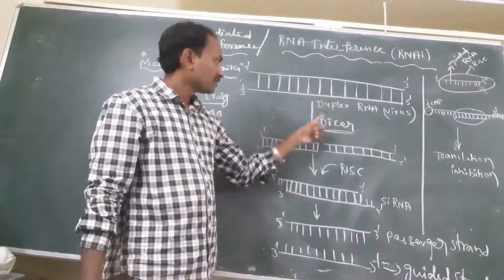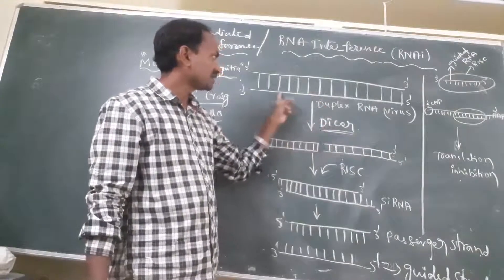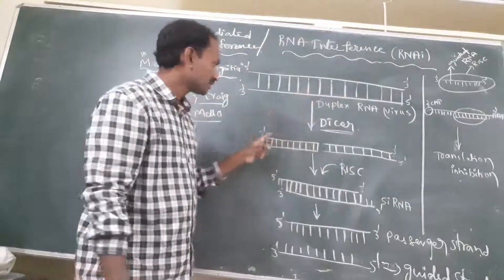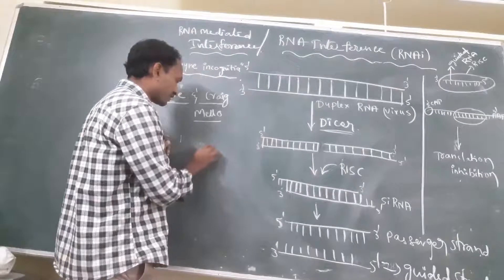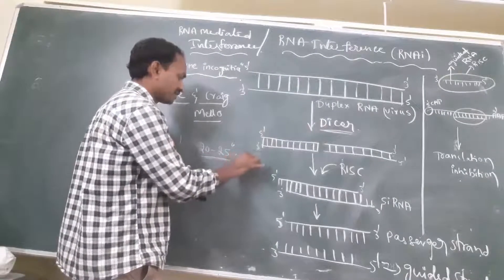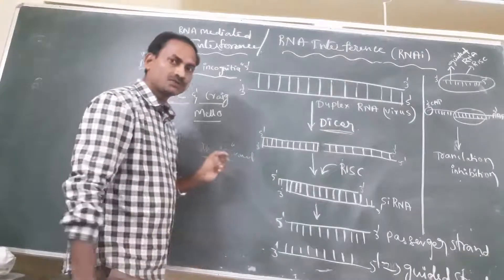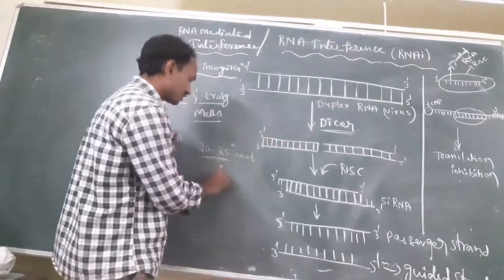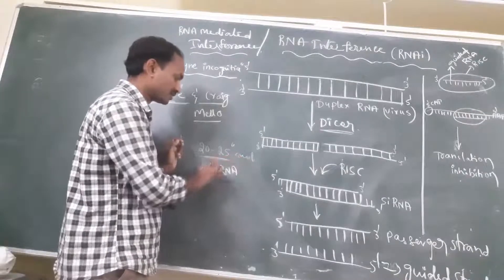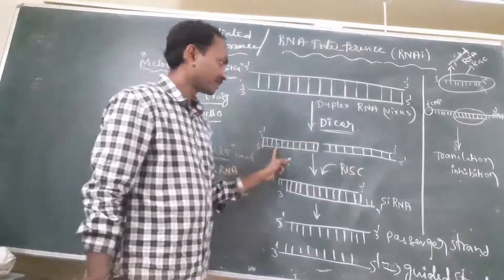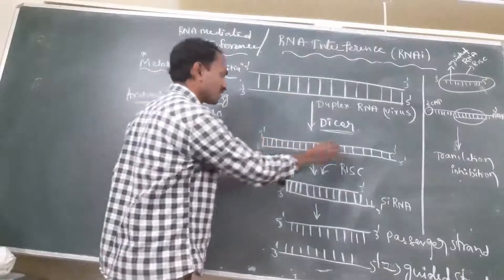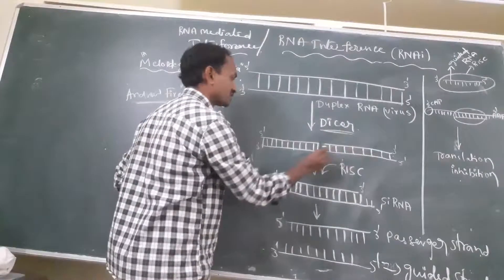Dicer is a double-stranded RNA ribonuclease protein. After activation by double-stranded RNA, Dicer induces the degradation of this double-stranded RNA into small fragments of 20 to 25 nucleotides in length, forming small double-stranded RNA molecules.